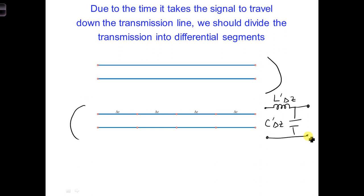And this will be one delta z segment of the transmission line. Now, notice that I labeled the circuit components with an L prime and a C prime. These are the line parameters per meter across each differential delta z segment of the transmission line.